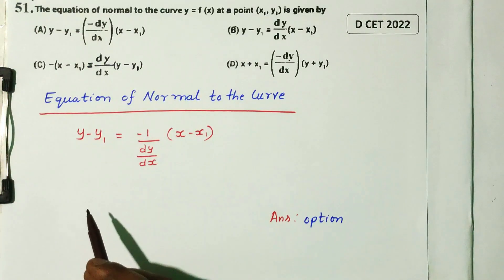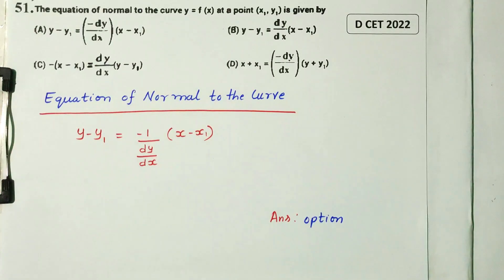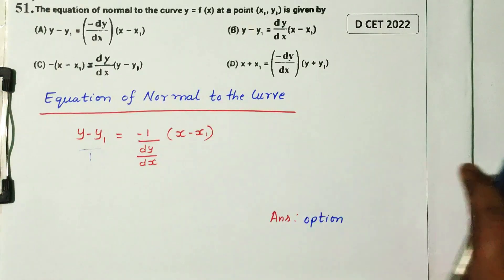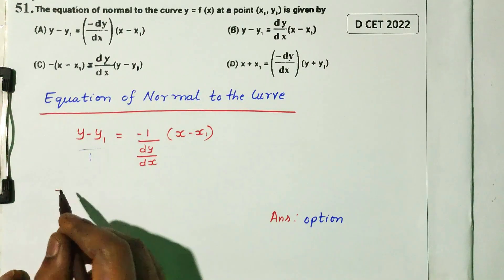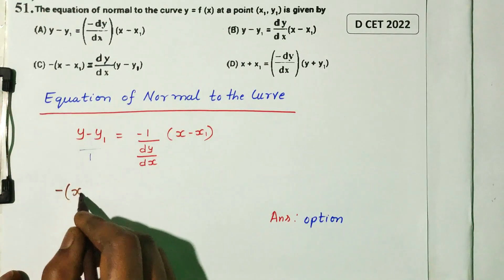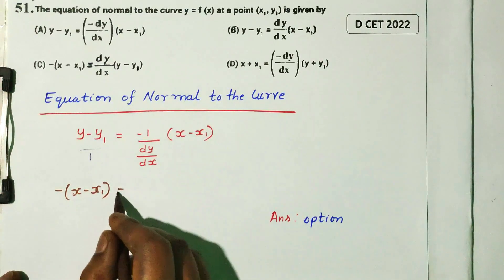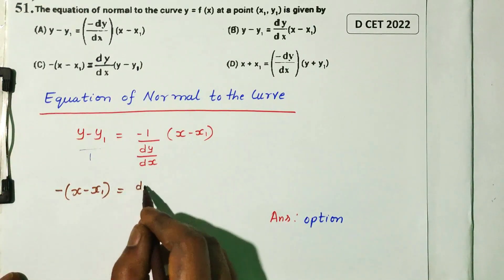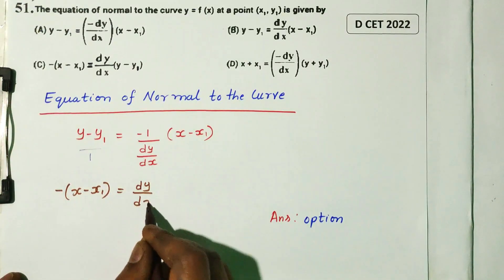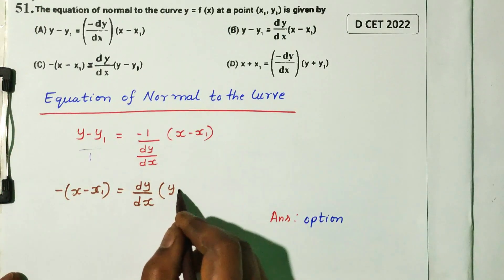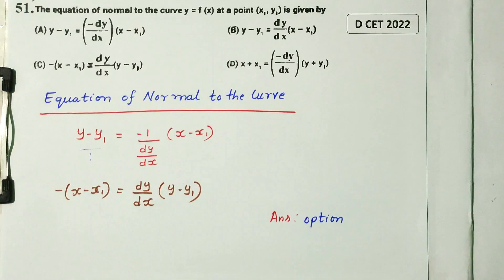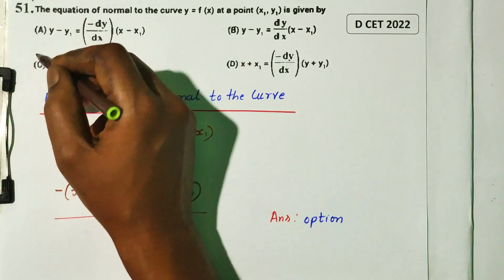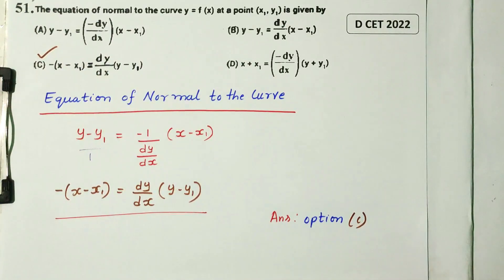Now solving by altering the equation through cross multiplication: minus (x minus x') equals dy/dx multiplied. After cross multiplication, y minus y' plus y' gives us the equation. Option C is the right answer for this DCT 2012 question.